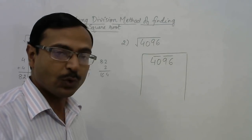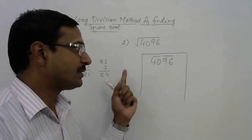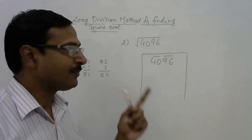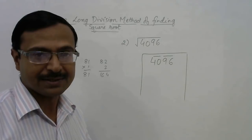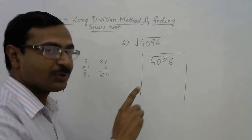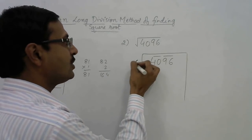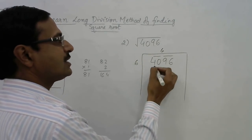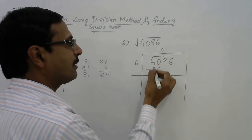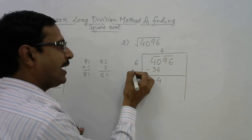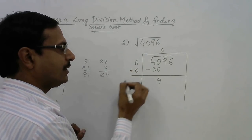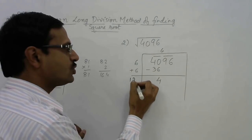We need a number which when multiplied by itself gives just less than 40. 6 into 6 is 36, but 7 into 7 gives 49 which is more than 40. So 6 into 6 is 36. Now subtract: 40 minus 36 gives 4, and add the number here: 6 plus 6 gives 12.